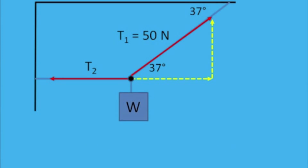So I can set up the equations, but first I need to find the value of these components. So we'll look at this vertical component. It is the opposite of the 37 degrees, so it becomes T1 sine 37.